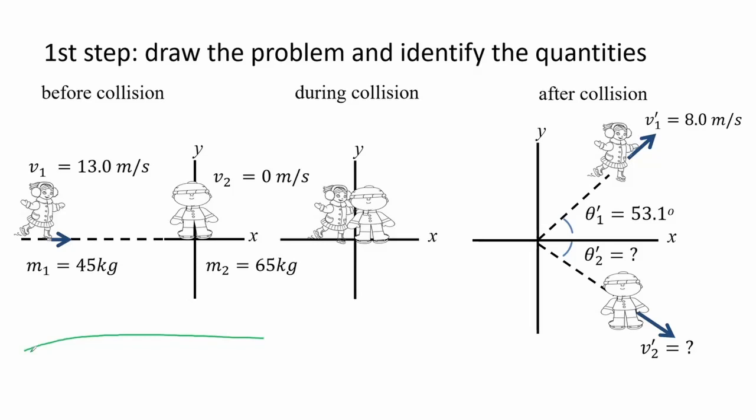We note that after collision mass 1 moves in the first quadrant and we assume that the direction of the second mass would be sensible if it moves in the fourth quadrant, and so it is assumed that mass 2's vertical component is negative.